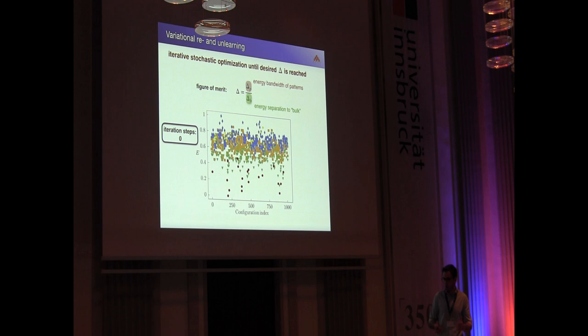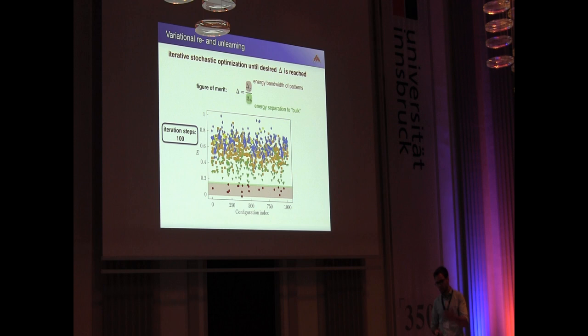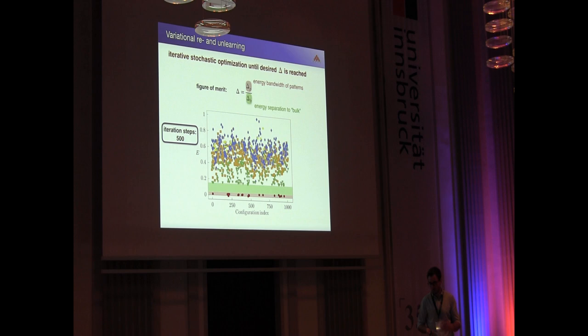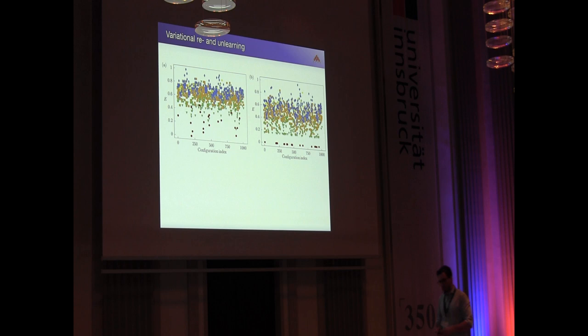Now we have all the tools at hand for our optimization algorithm. We can run some iterative stochastic optimization until desired delta is reached. We start out from the collective Hopfield network and then do relearning and unlearning steps. You can see now, if I do 100 steps, I have already a nice separation of these energy scales. And then if I go on by 500 steps, the spectrum looks already quite promising. And if I go on 1820 steps, then I have already a delta of 0.04.